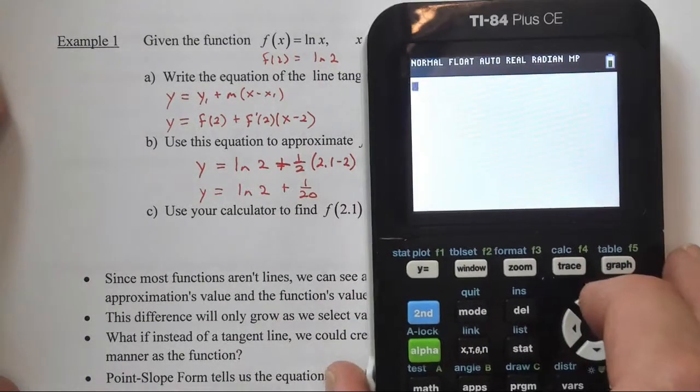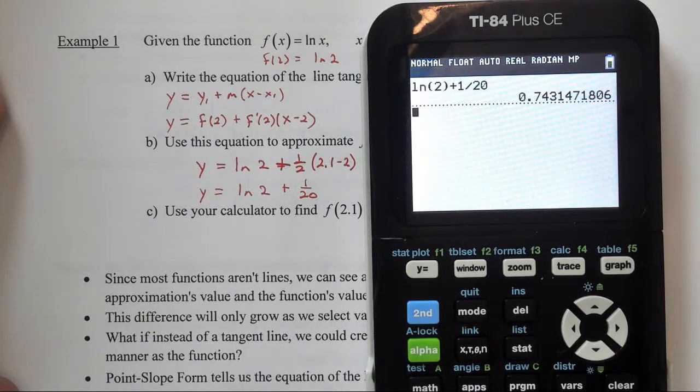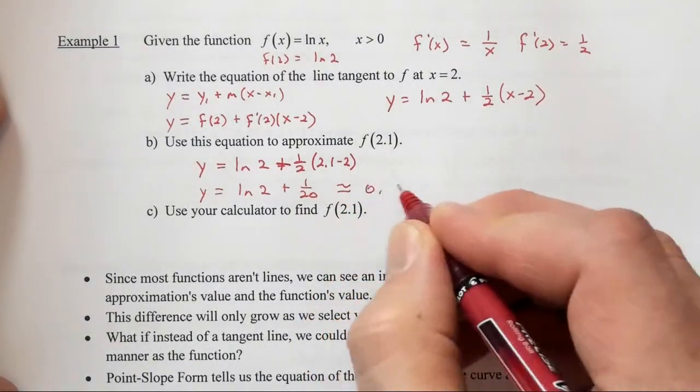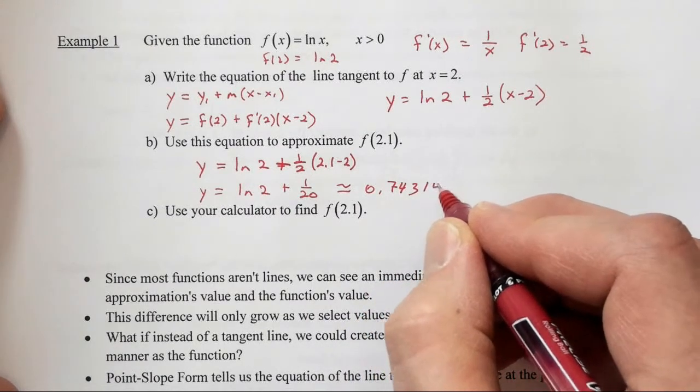If we go to our calculator, we have ln 2, and we're going to add to that 1 twentieth. And that gives us 0.743147. So it's approximately equal to 0.743147.